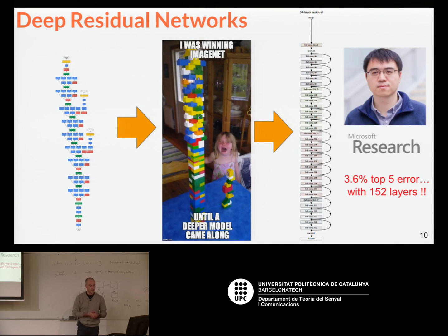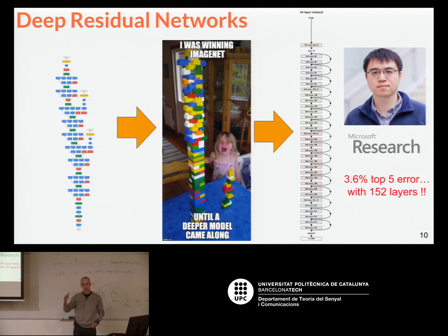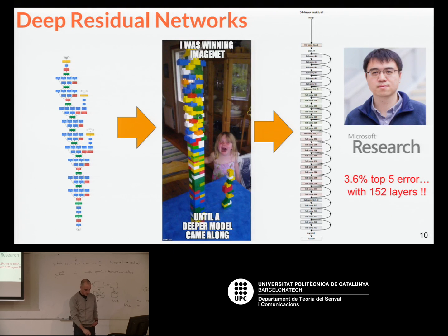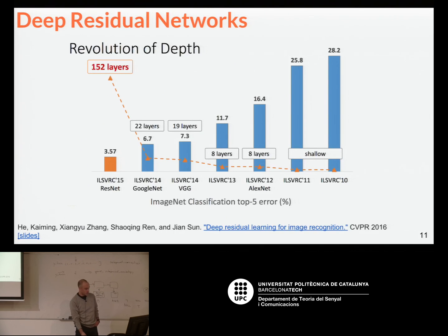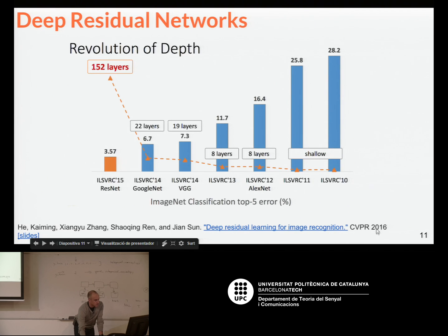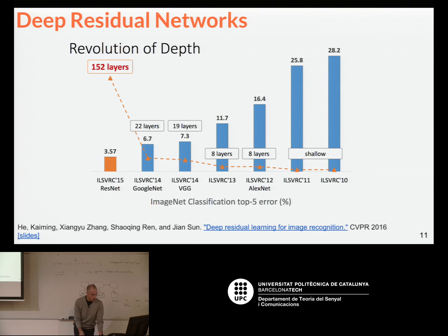By using this trick — it was a team from Microsoft — they beat previous results. That year Microsoft won ImageNet with a 152-layer network. The error on ImageNet in 2015 — the paper was published the year after — that's what's called ResNet. GoogleNet is the one I presented before. This way they could improve performance and set some trends in the world of architectures.